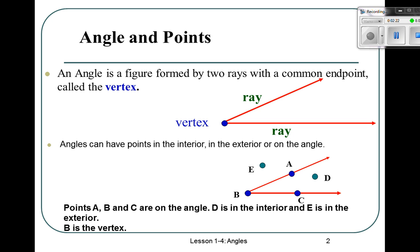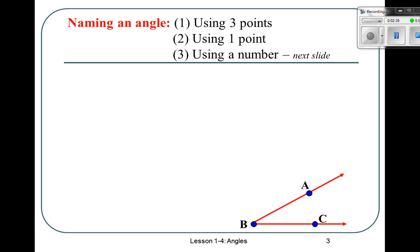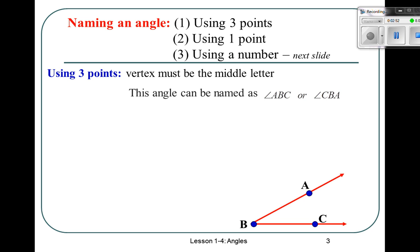You can pause these at any time. If I'm going too fast, or if you fall asleep, or if you have to go get a snack, you can pause and come back. But be sure to come back. We can name an angle three ways. Number one is using three points, the vertex must be written as the middle letter.